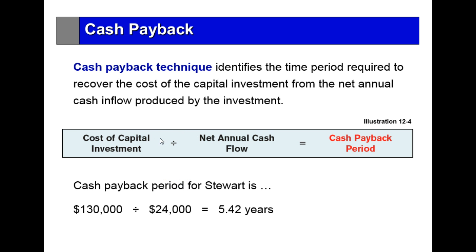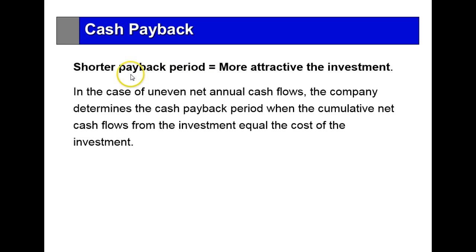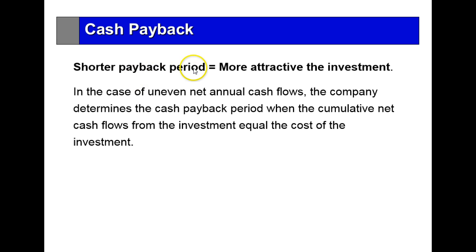The payback period is 5.42 years, with a useful life of 10 years — not too bad. The shorter payback period is generally more attractive because you recoup the cost much quicker. Sometimes cash flow isn't on a continuum — it can be cyclical. When there are uneven cash flows, the company determines the payback when the cumulative net cash flow from the investment equals the cost of the investment.